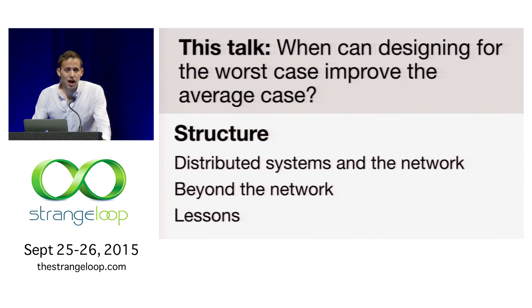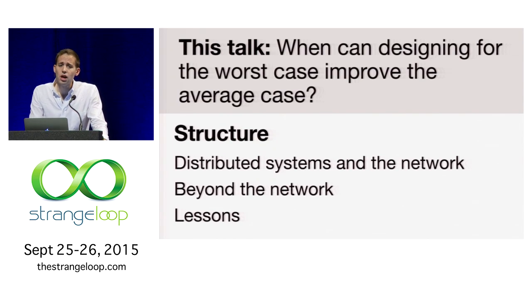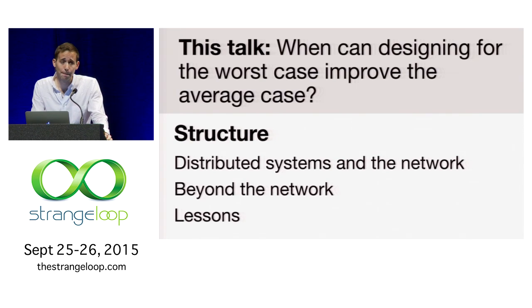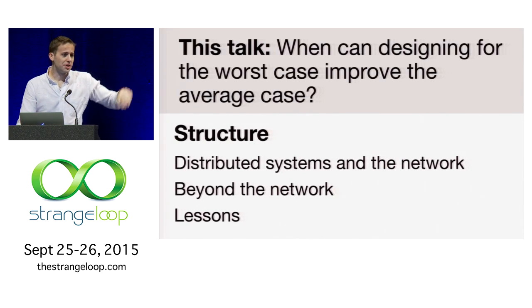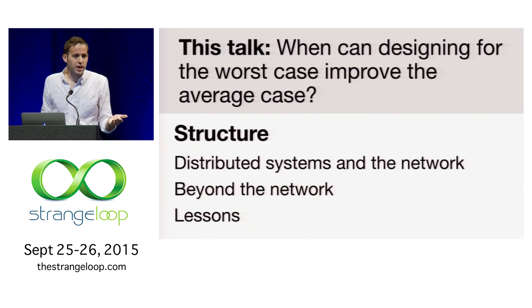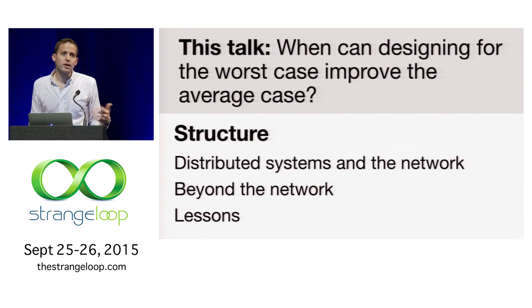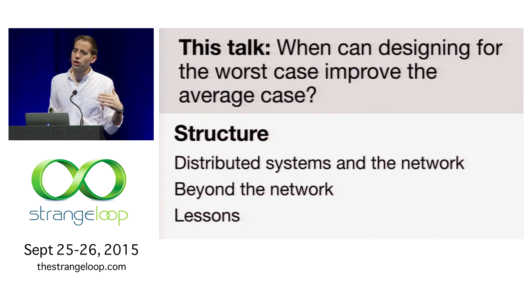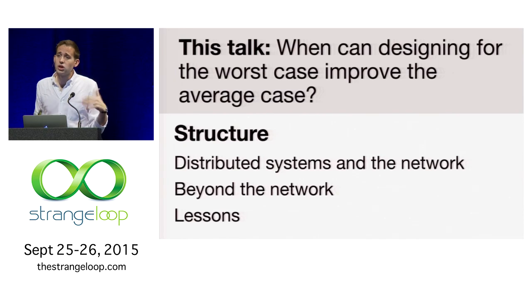This doesn't always apply, but I want to highlight when it can apply and what it means for the way we build and think about software systems. I'm going to describe three major points. I study distributed systems, so I'll spend most of the time talking about distributed systems and the network — essentially, by handling worst case network behavior we can frequently improve the average case as well. It turns out there are a couple other instances where this trade-off isn't really a trade-off at all, with implications for general optimization problems and human-computer interaction and accessible design. I'll leave you with lessons on how to use this type of reasoning not just in distributed systems but when building software in general.